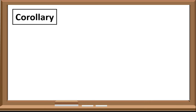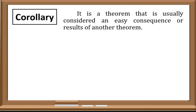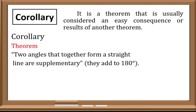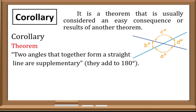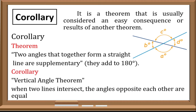Next would be corollary. A corollary is a theorem that is usually considered an easy consequence or result of another theorem. For example, we will use this theorem: two angles that together form a straight line are supplementary — when they add up, the result is 180 degrees. Where if you add two angles whose sum is 180 degrees, therefore these two angles are supplementary angles. Because of this theorem, there is another theorem that results from it.